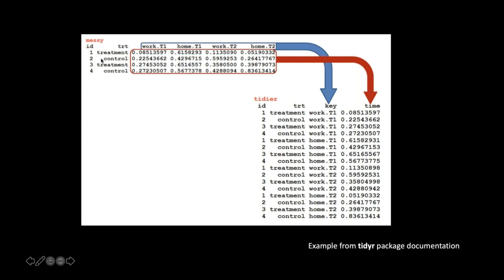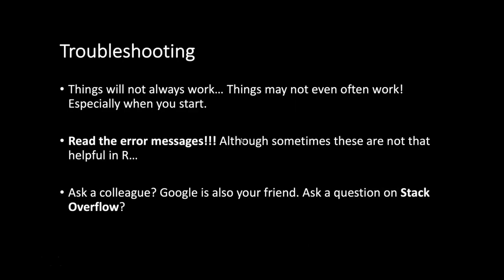The tidyR package documentation calls wide format basically 'messy data.' In general, if you want to do statistics, you'll need your data in long format — this is really the default. Wide format is mainly useful for things like heatmaps or gene expression studies where you might want a genes-by-patients matrix. There are lots of packages to convert between the two, so don't get too hung up on it, but be aware — if R isn't seeing your data how you expect, it may be a format issue.